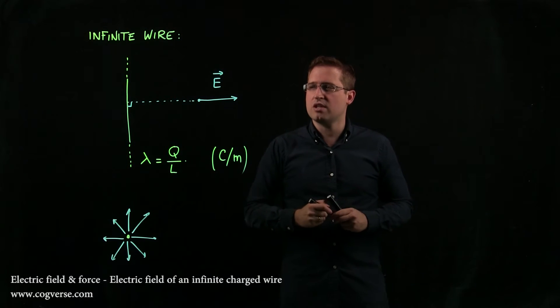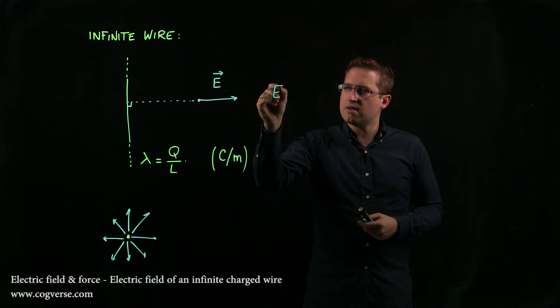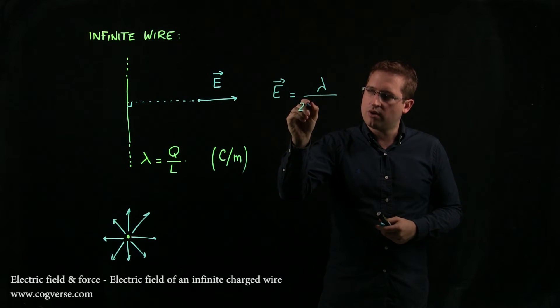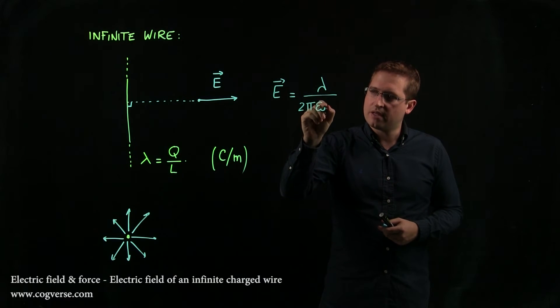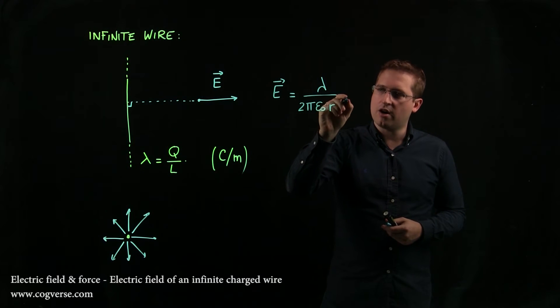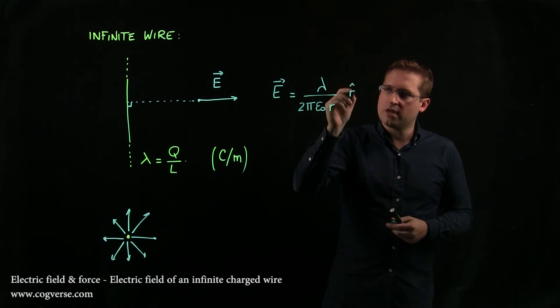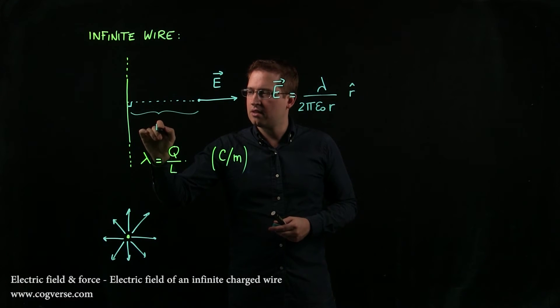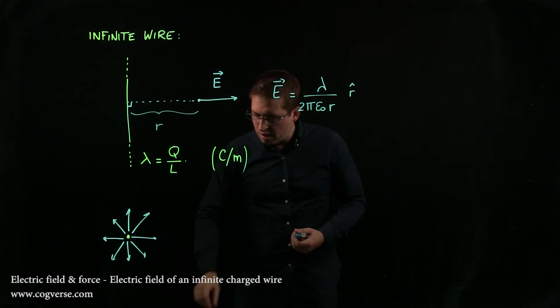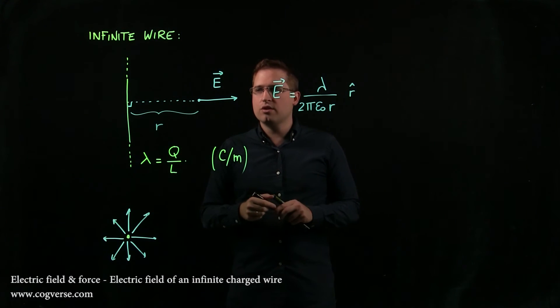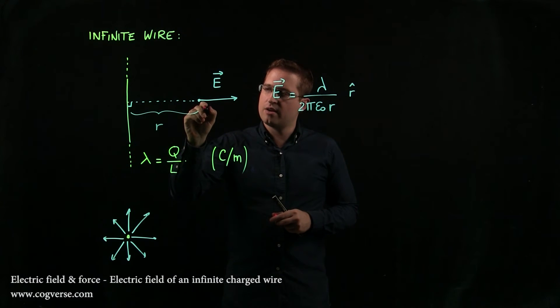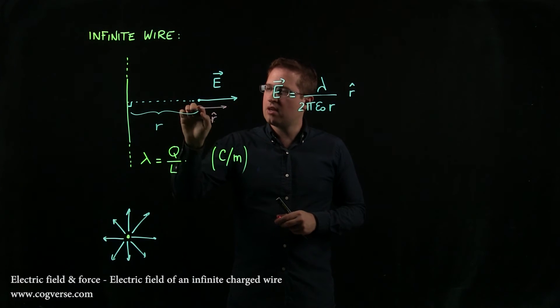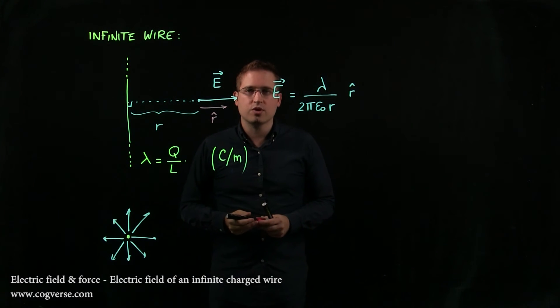And the expression for E is E equal to lambda over 2 pi epsilon naught r in the r hat direction. Assuming, of course, that this distance is r, and remember that r hat is the unit vector that is going to be pointing away, like this, and perpendicular to the wire.